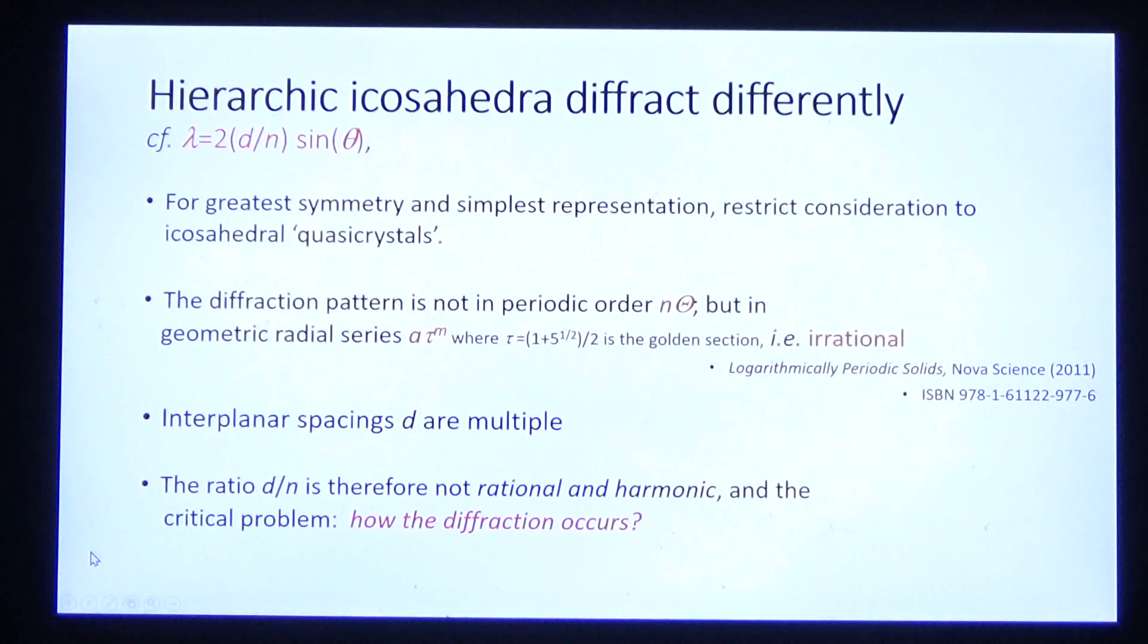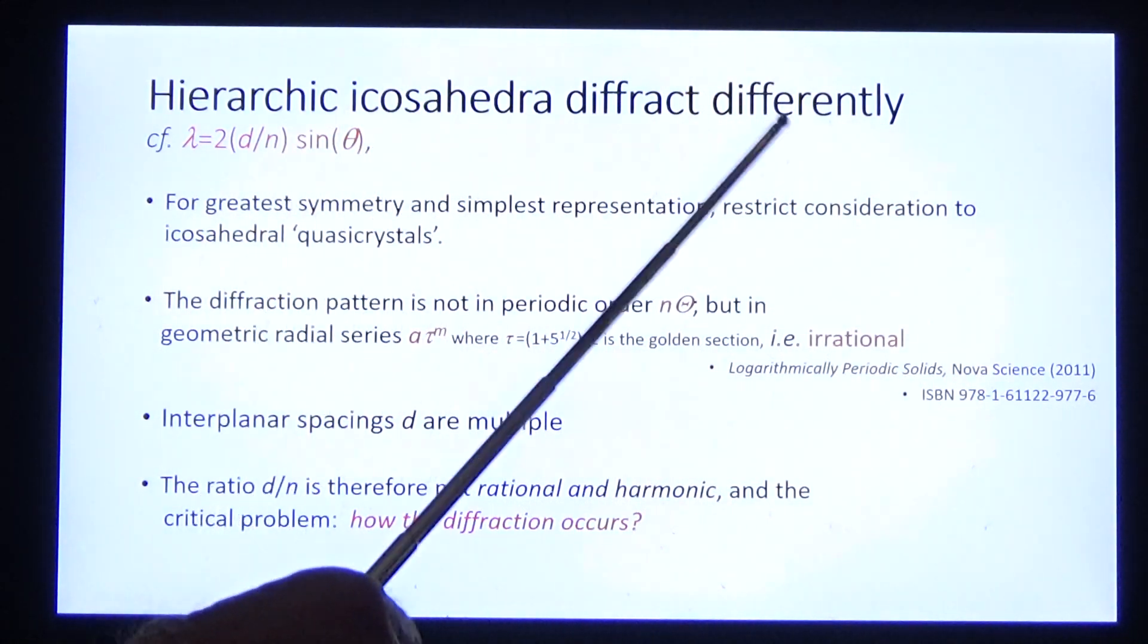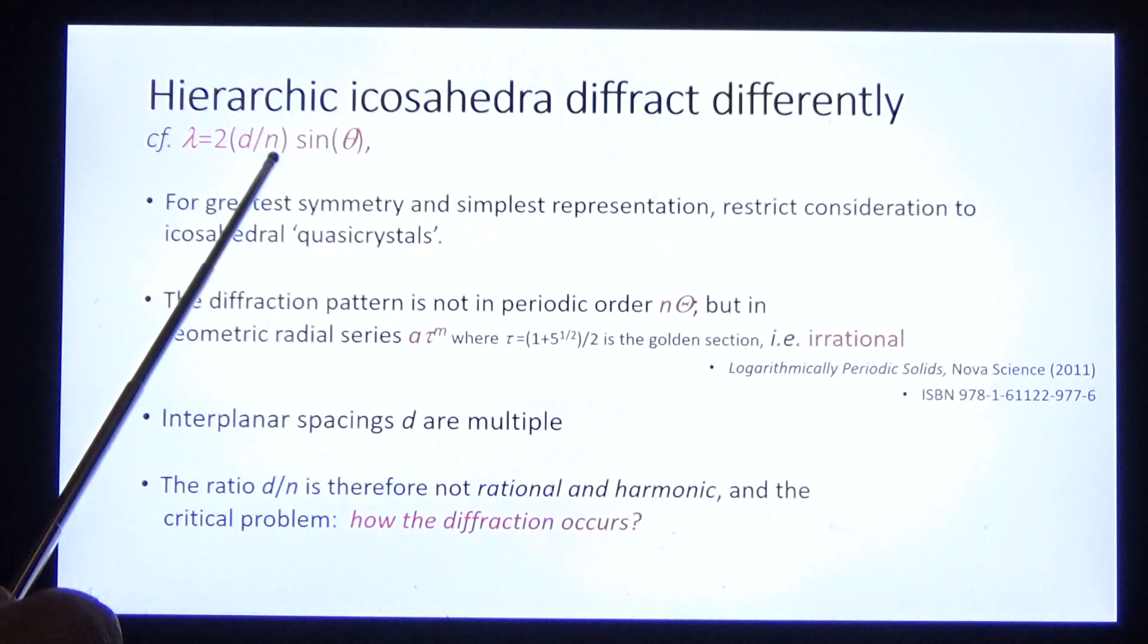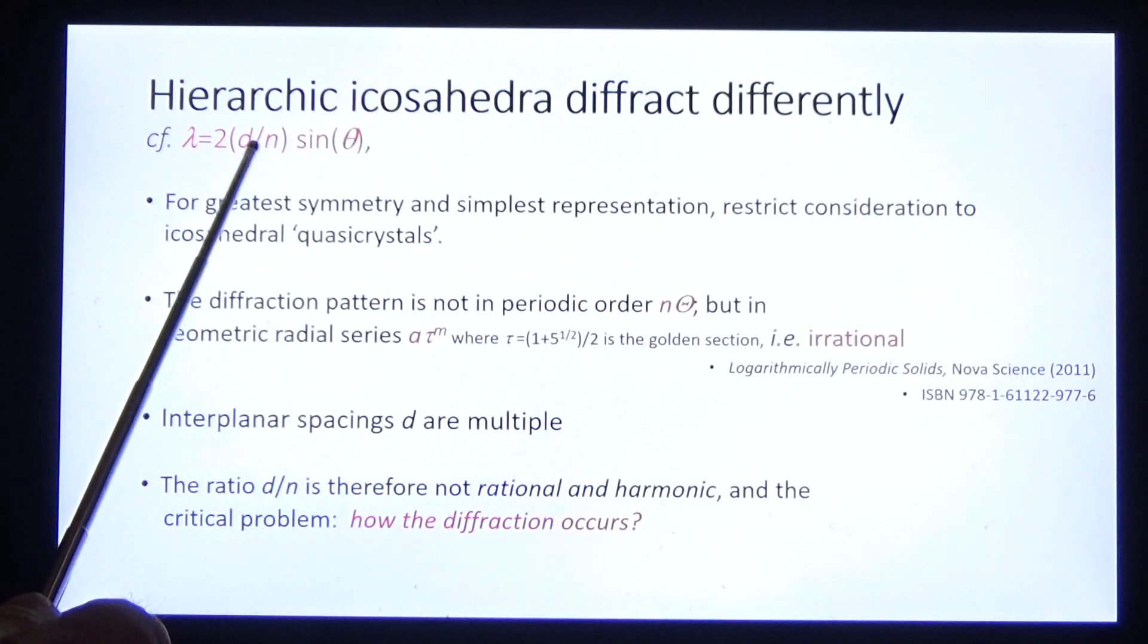Hierarchic icosahedra diffract differently from crystals. In crystals, n, the order, is integral. In the icosahedra, as we've seen, they are geometric and irrational.